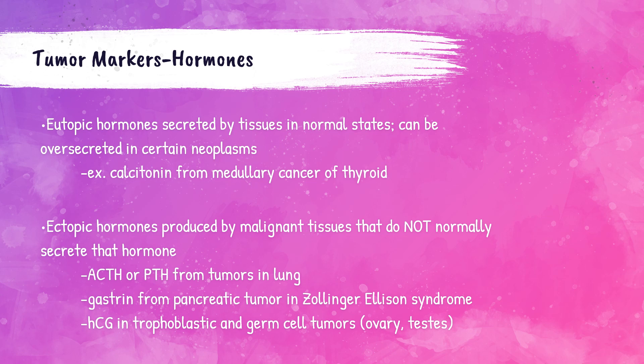Ectopic hormones are those produced by malignant cancerous tissues that do not normally secrete that hormone. For example, ACTH is normally produced by the pituitary gland and parathyroid hormone is normally produced by the parathyroid gland, but these can be secreted by the lungs when they have tumors. Gastrin is a hormone produced by G cells in the lining of the stomach and upper small intestine; in Zollinger-Ellison syndrome, tumors can arise in the pancreas and cause secretion of gastrin. HCG is a hormone secreted by the placenta during pregnancy and can be secreted unnaturally in tumors of the ovary and the testes.